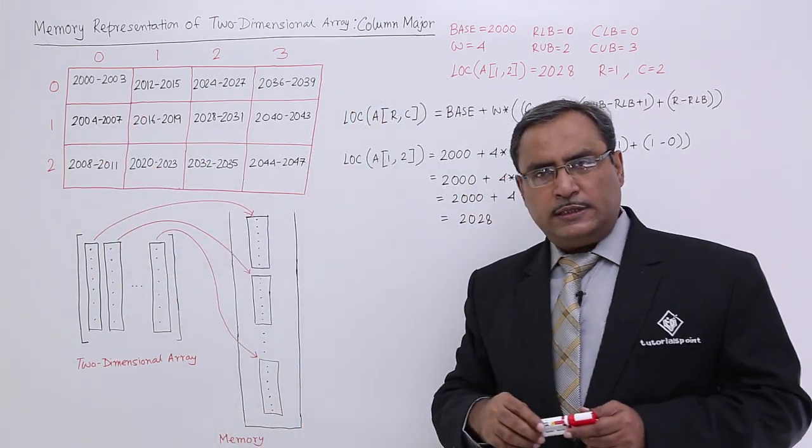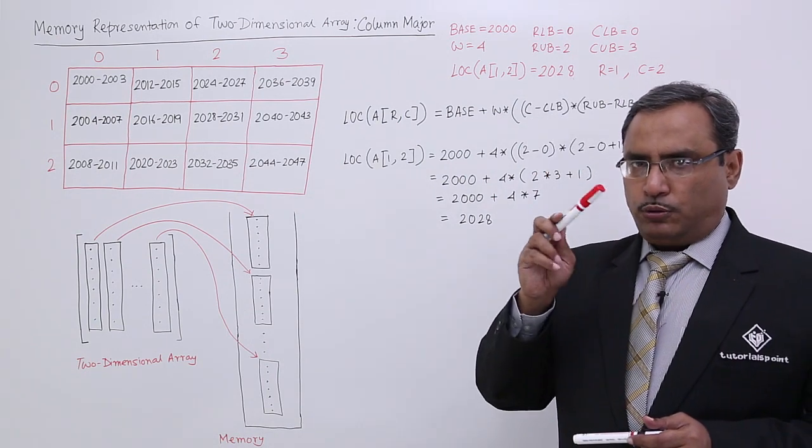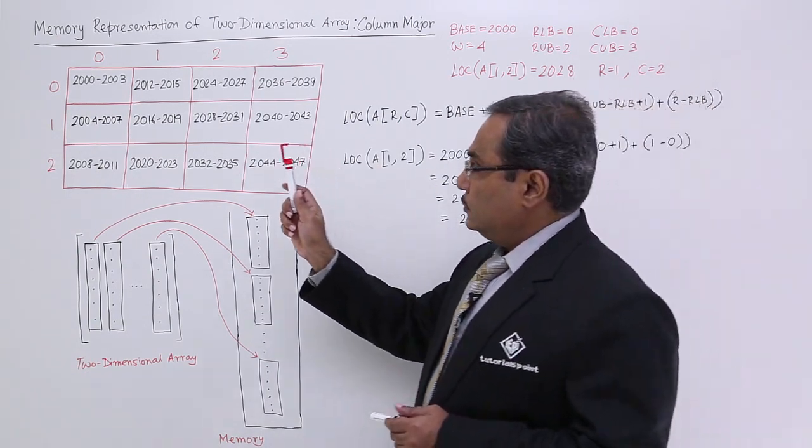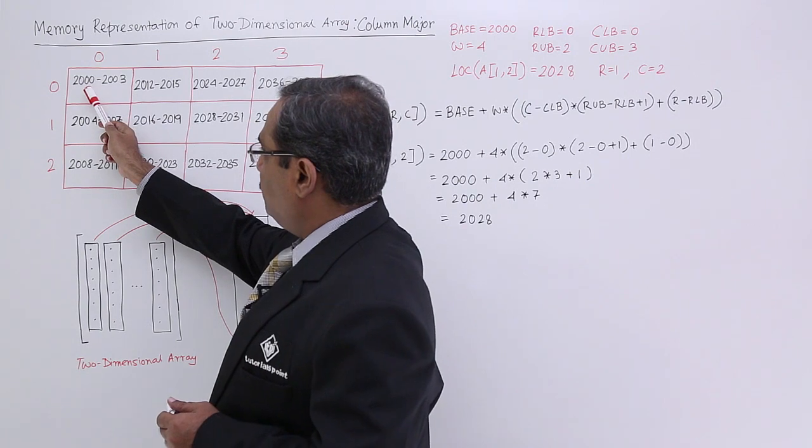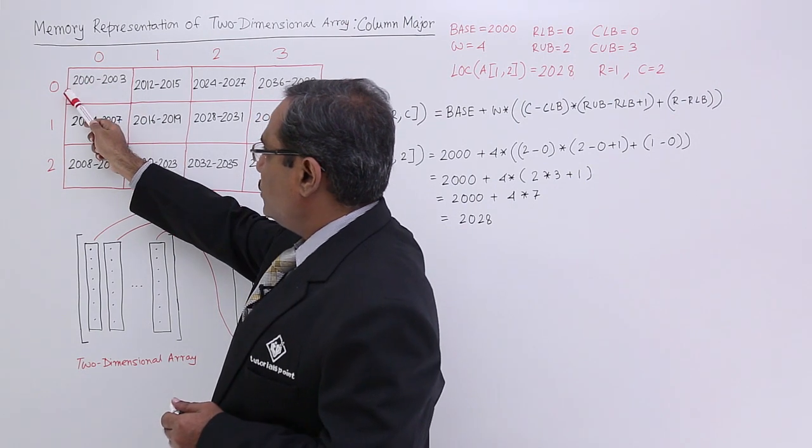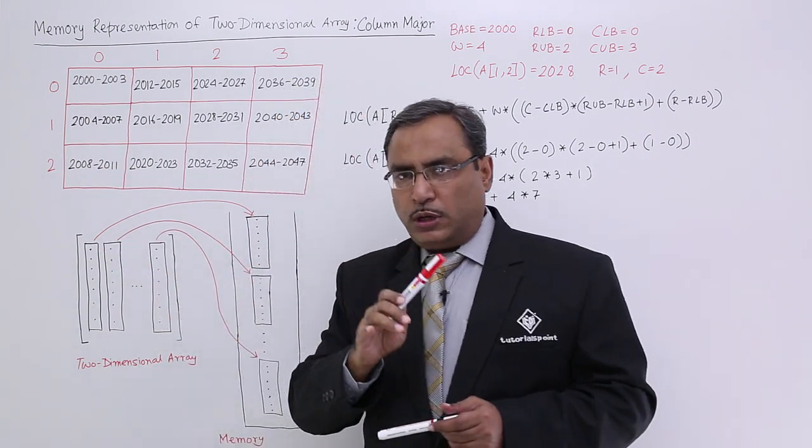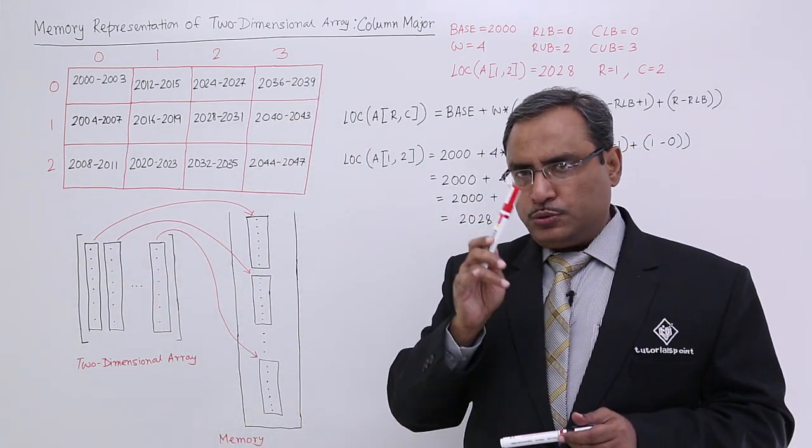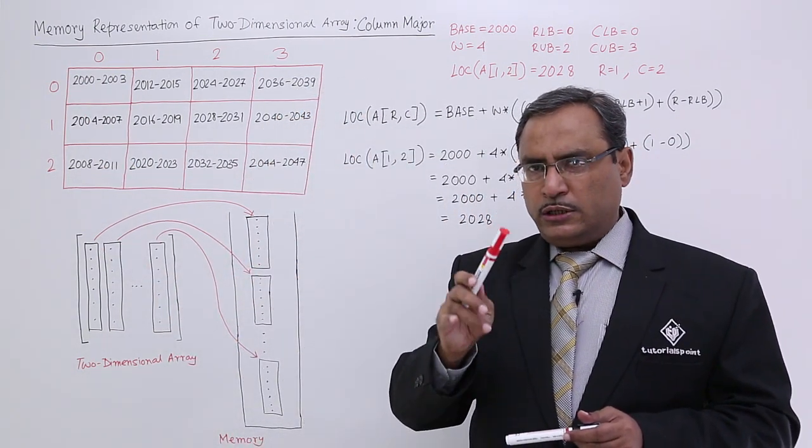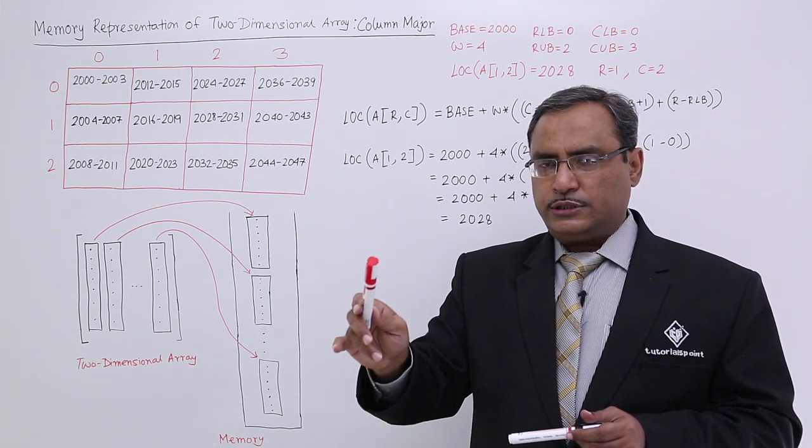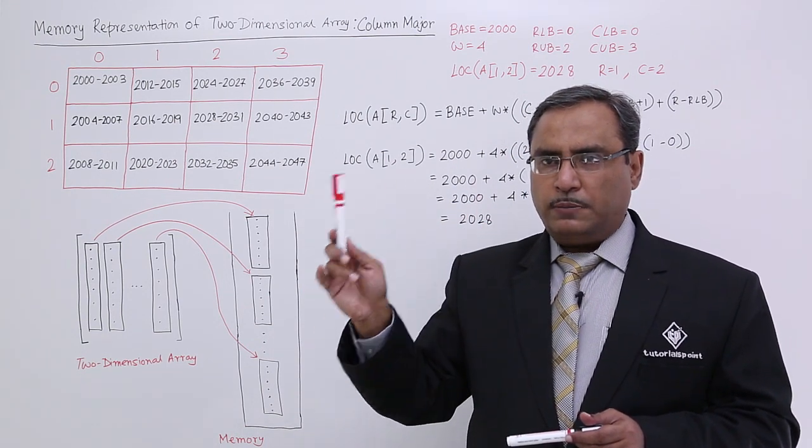2000 is the starting base address and width is 4. Starting from 2000, the first location that is row number 0, column number 0 will be ranging up to 2000 to 2003 because 2000, 2001 location, 2002 location, 2003 location. Each location contains one byte.